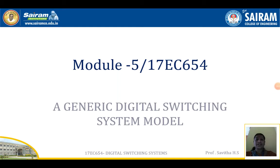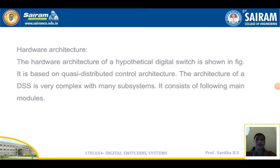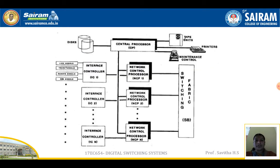We will continue with Module 5: a generic digital switching system (DSS) model. The hardware architecture of a hypothetical digital switching system is as shown in the figure. It is based on a quasi-distributed control architecture. The architecture of a DSS is very complex with many subsystems. It consists of the following main modules. In the diagram we can see the switching fabric, noted as SF, and network control processors NCP1, NCP2, up to NCPn, all connected to the switching fabric.